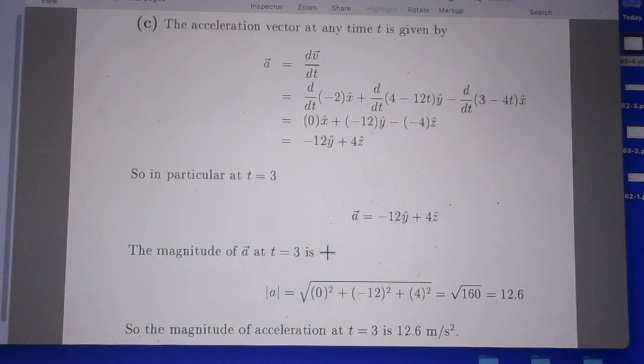If you want to know the magnitude of a, you have to take the square root of the x squared component, the y squared component, and the z squared component. There is no x component. The answer is 12.6 meters per second squared.